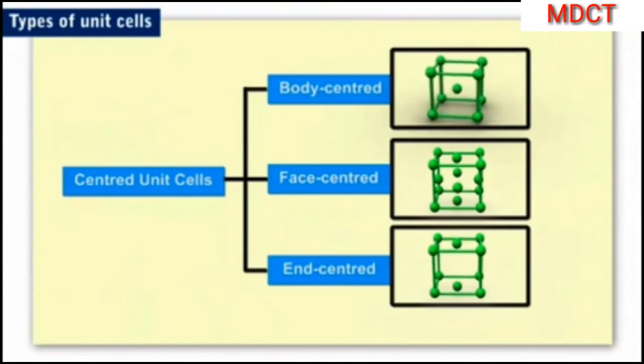A body centered unit cell has constituent particles at all its corners as well as one particle at its body center as shown here.